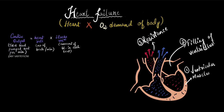So in all these three cases, the heart fails to meet the oxygen demand of the body tissues, and all of these can be caused by a pre-existing or underlying heart condition. For example, a heart attack could permanently damage a part of the heart muscle, because of which it cannot beat well. And that can reduce the cardiac output and cause a heart failure later in life.